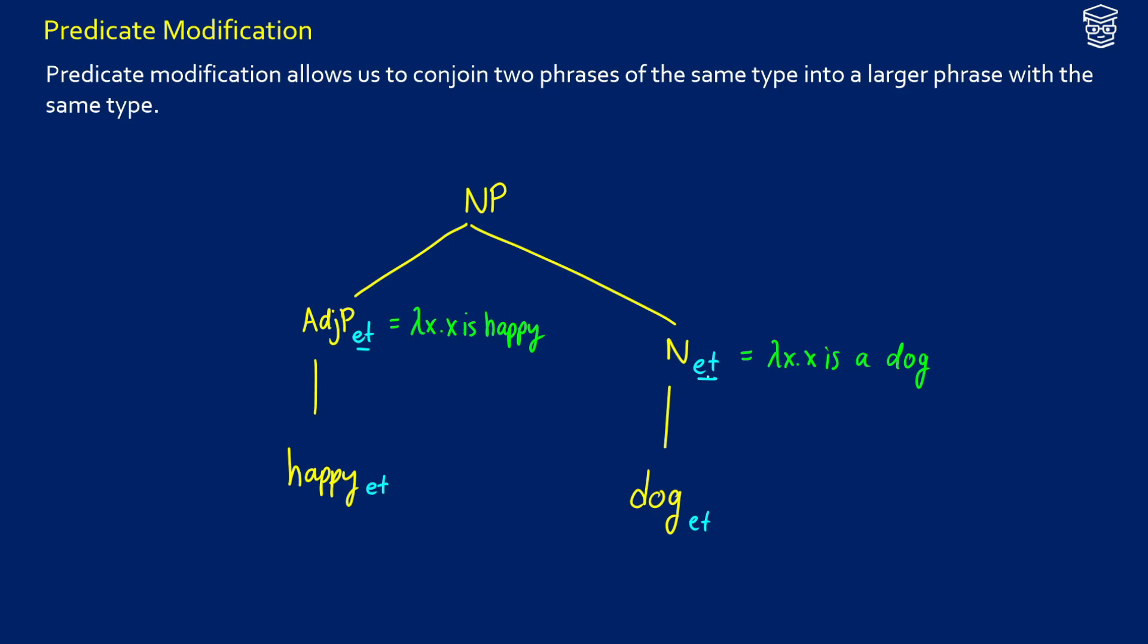But what predicate modification allows us to do is to take two of the same type and conjoin them together. So if we have an ET and an ET, we can form a new ET with the simple rule that we're going to bind. So we'll call this lambda x, and we're going to have x is happy and x is a dog.